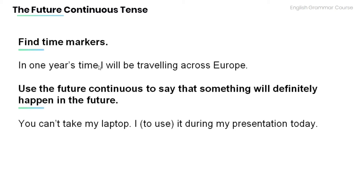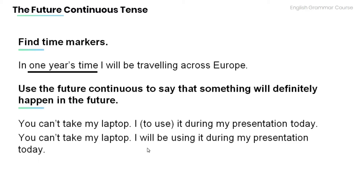Now read the following sentence and find the time markers. In one year's time I will be traveling across Europe. Answer: one year's time. Remember to use the future continuous to say that something will definitely happen in the future. Now read the following sentence and provide the future continuous form of the word in the bracket. You can't take my laptop. I [to use] it during my presentation today. Answer: I will be using it during my presentation today.